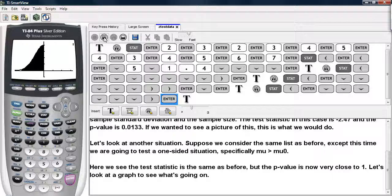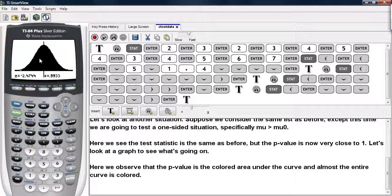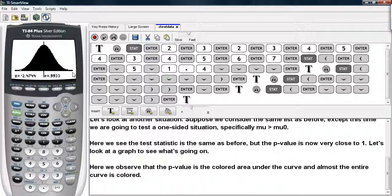And you highlight Draw, and you hit Enter. And now it shows you a picture of the situation that you asked the calculator to compute. The shaded area under the curve represents the p-value, and as you can see,